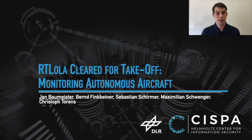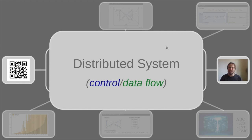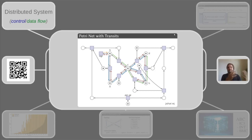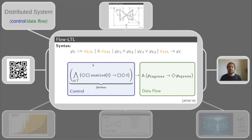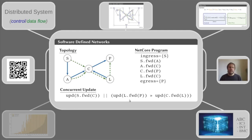Adam MC is a model checker for distributed systems where we can separate the control from the local data flow part. As a model, we consider Petri nets with transits: on the control side we have a standard Petri net, and for the local data flow part we refine the flow relation of the Petri net. As a specification language we consider flow LTL, using standard LTL to reason about the control part and also to reason about the local data flow of selected runs. All this is reduced to a hardware model checking problem, giving it to ABC. Applied to software-defined networks, our new reduction method significantly reduces the runtime compared to a previous prototype. The tool is available online.